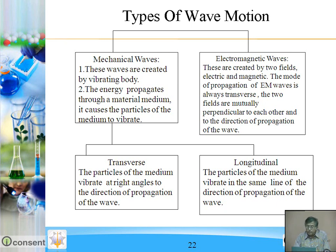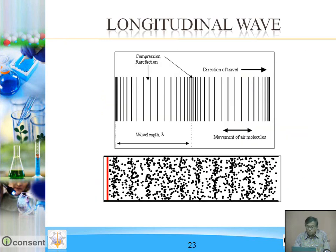Now electromagnetic waves — these are created by two fields: electric and magnetic. The mode of propagation of electromagnetic waves is always transverse. The two fields are mutually perpendicular to each other and to the direction of propagation of the waves.